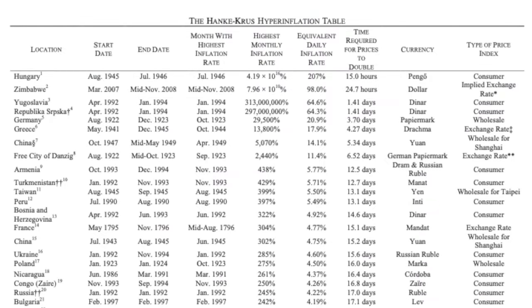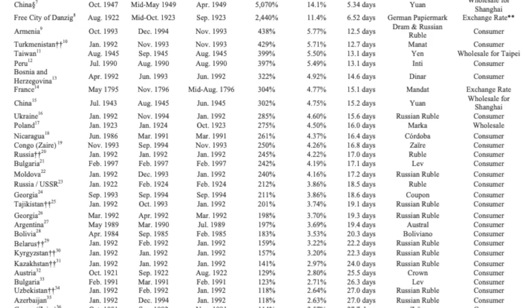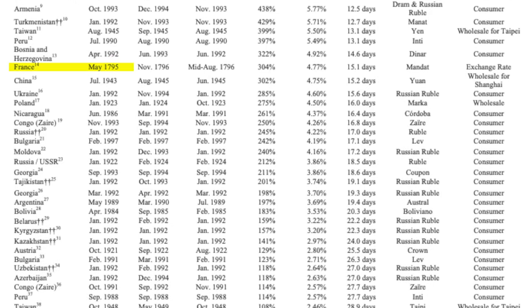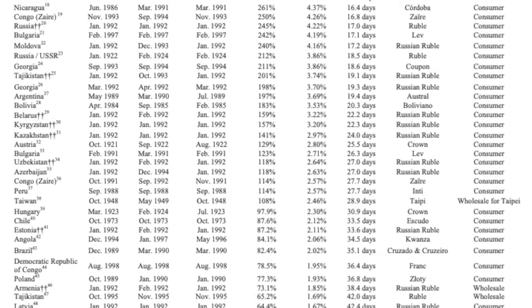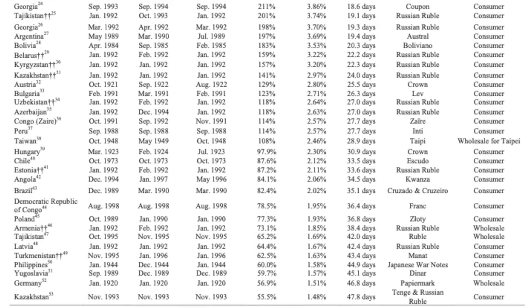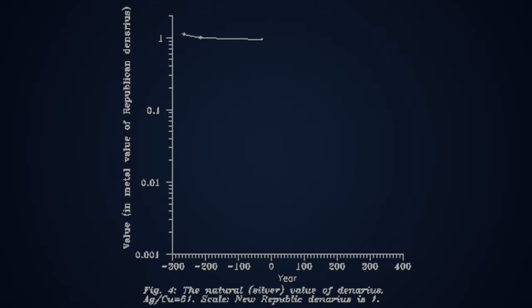So far there have been 53 cases of hyperinflation, found in the Henke Cruz hyperinflation table. A clear pattern becomes visible: with one exception — the hyperinflation during the French Revolution — all cases took place within the last 101 years. Every single one took place on a fiat money standard, not a single one on a commodity money standard. There has been severe inflation in ancient Rome due to coin clippings and debasement, but this took many years and is not considered hyperinflation by that definition.